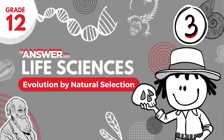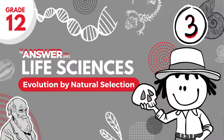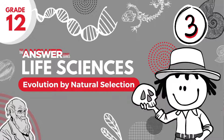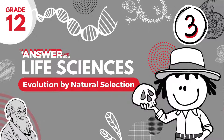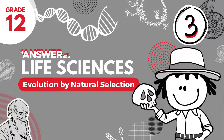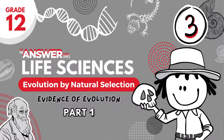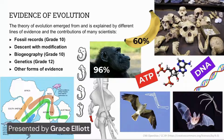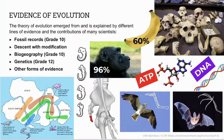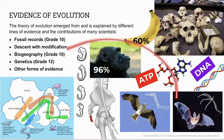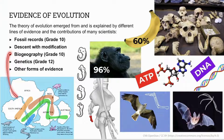Hello Grade 12s and welcome to the Answer Series Life Sciences videos based on our study guides. If you don't have our Grade 12 Life Sciences books Parts 1 and 2, you'll still be able to follow these lessons. This video looks at the evidence of evolution Part 1, focusing on the fossil record and descent with modification. In Part 2 we'll look at biogeography, genetics, comparative biochemistry, vestigial organs and comparative embryology.